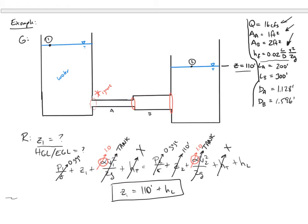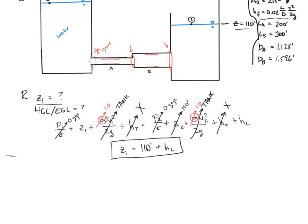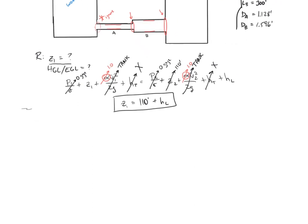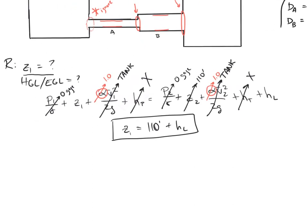The head loss comes from four sources: friction loss along pipe A, friction loss along pipe B, the expansion from A to B, and the exit loss into the second reservoir. There's also the entrance loss, which we're ignoring. Let's compute these one at a time.